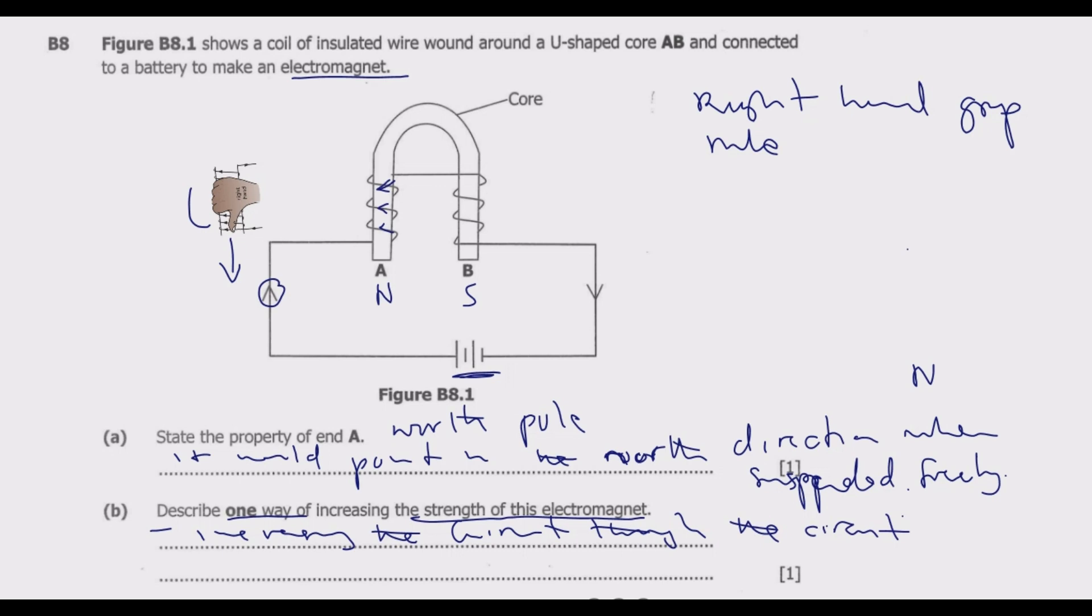And then number two: increasing the number of wire basically wound. So the number of wire wound around the U-shaped core. If we increase the number of coils wound, then we can increase the strength of the electromagnet.